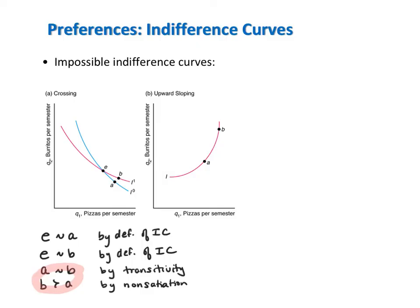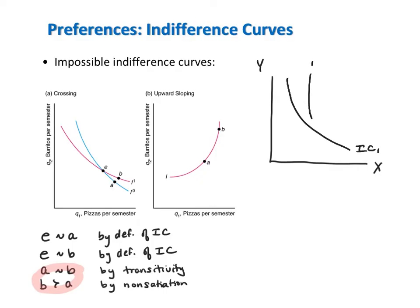Students don't often literally cross their indifference curves, but they do something like this: they draw two indifference curves that, if extended, would cross each other. This is also a problem, because a simple extension of IC2 would then cause the curves to cross each other.